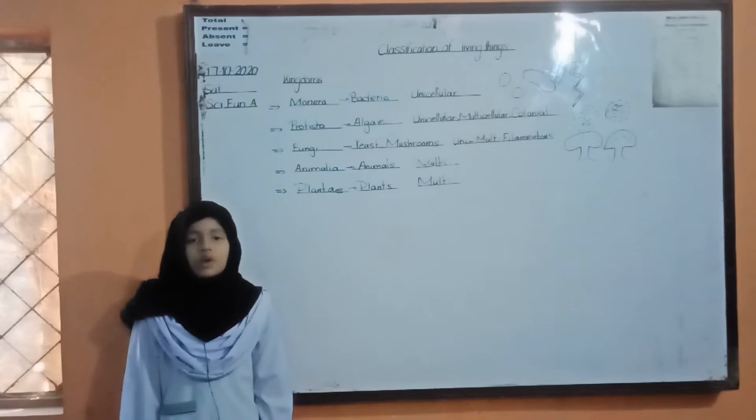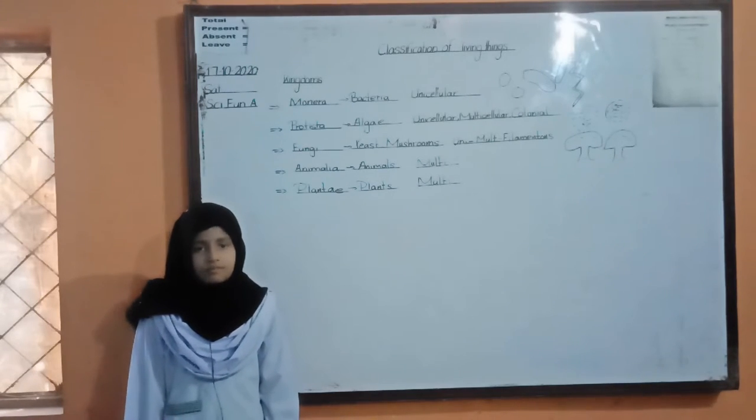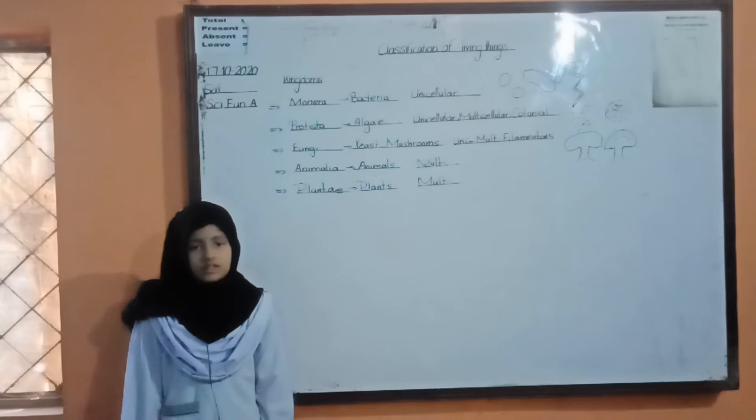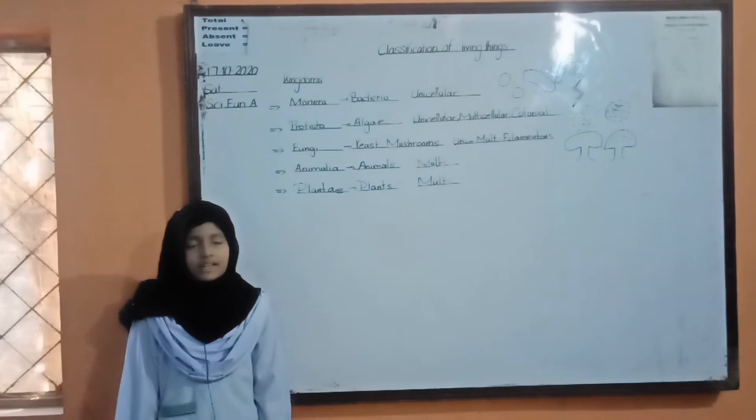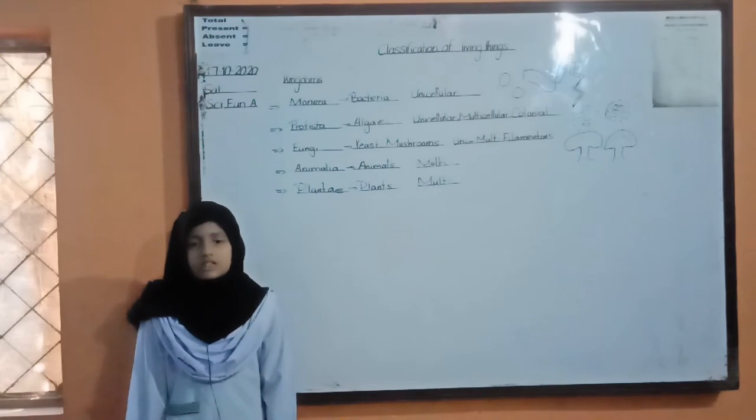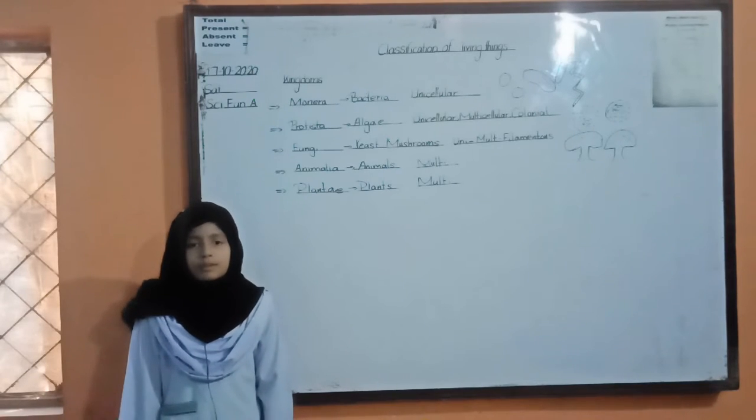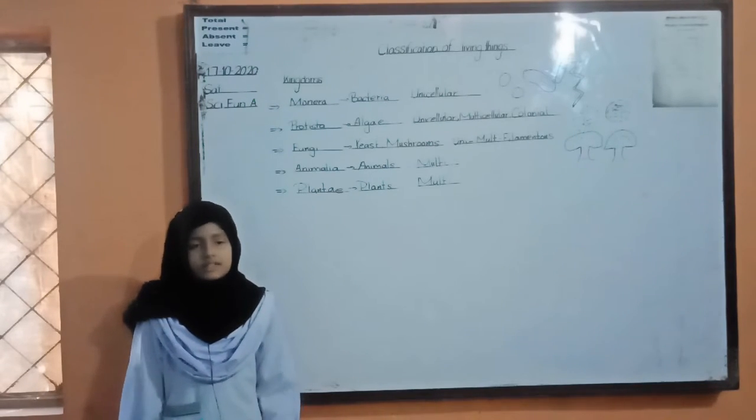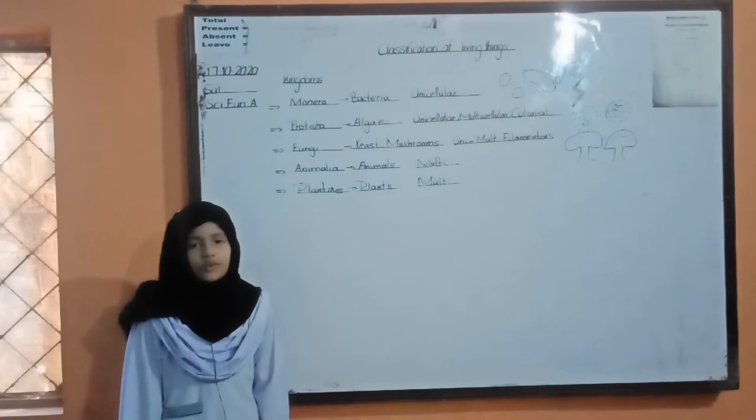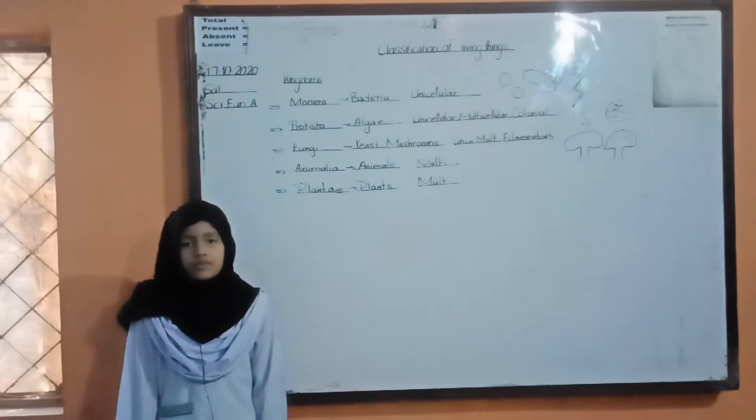First of all, Kingdom Monera. Kingdom Monera consists of bacteria. Bacteria are very small. They can be seen under a microscope. They cannot be visible to the naked eye. Some bacteria are useful for us and some are harmful for us. Useful bacteria are found in our intestine and harmful bacteria make their food with dead material. Useful bacteria are also found in our food.